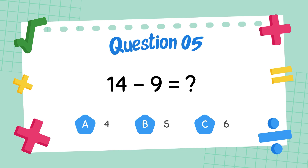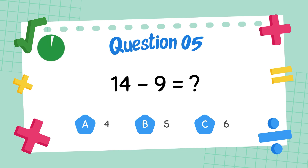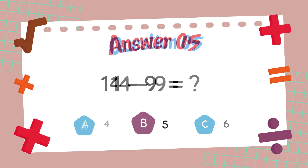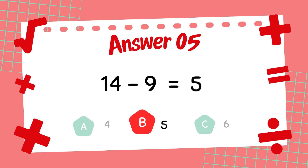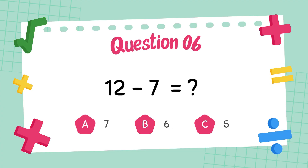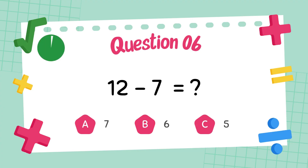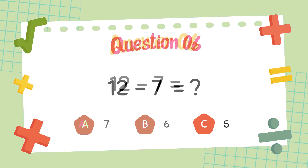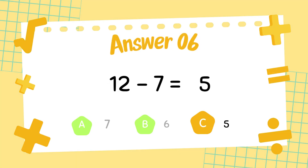What is 14 minus 9? The answer is 5. What is 12 minus 7? The answer is 5.